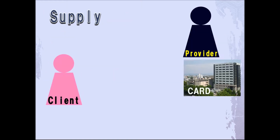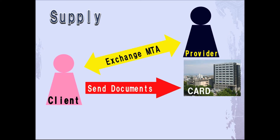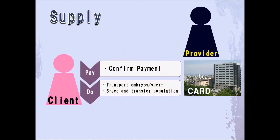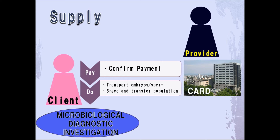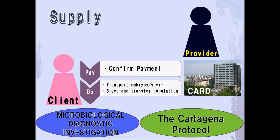Next, I will explain about the application method for supply. Before making an application, the client and the provider should exchange their MTA, and the client should send CARD their relevant documents. Upon reception of the documents from the client, CARD will send an invoice to them. As soon as CARD confirms payment, CARD will send the client embryos or sperm or will prepare mice populations. We always carry out a full microbiological diagnostic investigation on the mice before sending them to the client, and the CARD RGINA protocol on biosafety is observed at all times.